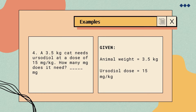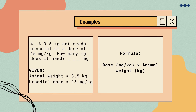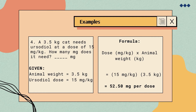Problem number 4: a 3.5-kilogram cat needs ursodiol at a dose of 15 milligrams per kilogram. How many milligrams does it need? We have the weight of the cat, which is 3.5 kilograms, and the ursodiol dose, which is 15 milligrams per kilogram. Using the same formula — animal weight multiplied by the dose — we have 3.5 kg times 15 mg/kg, which equals 52.5 milligrams per dose. Therefore, a 3.5-kilogram cat needs 52.5 milligrams of ursodiol.